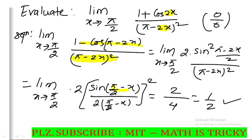So π/2 minus x and π/2 minus x — when x tends to π/2, we use the substitution. The expression simplifies using anti-trigonometric approach. So we simplify or find the correct form for the limit.